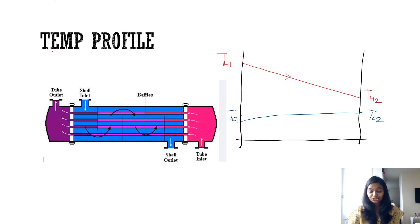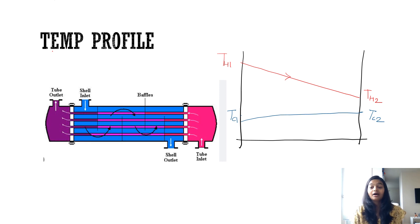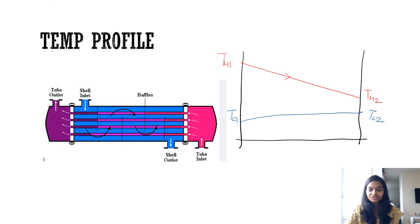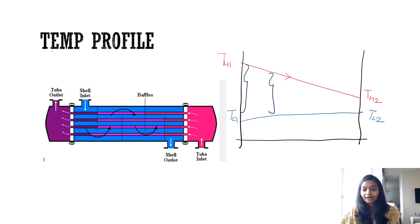As we see in this heat exchanger where hot and cold fluids exchange their heat, according to this particular temperature profile we find that at every different point of the exchanger there is a different temperature difference. As you see in this figure, the temperature difference at one point is larger and it keeps getting lesser and lesser.